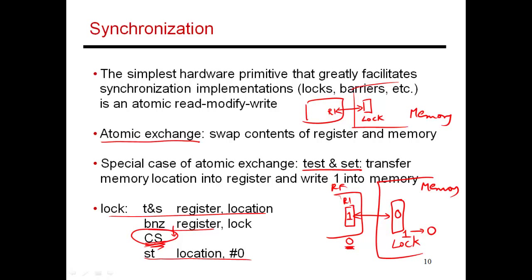While this thread was in the critical section, let's look at another thread trying to acquire the lock. That thread also put a 1 into its register. Since the lock is occupied, the memory location stores a 1, and when you do an atomic exchange, the register now contains 1 and the memory location also contains 1 — so the effect on the lock is none. This value in the register tells the attempting thread that its attempt failed, because the lock was already occupied. So this thread, after doing the test-and-set, sees a 1 in its register — not equal to 0 — and branches back to retry. It keeps executing test-and-set in a loop until somebody releases the lock, at which point the test-and-set finally succeeds and that thread can enter the critical section.